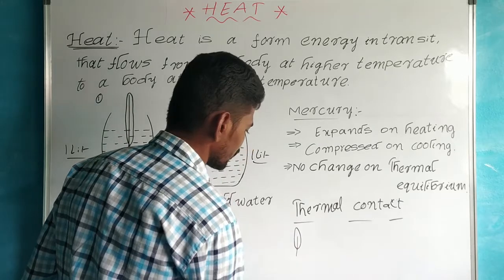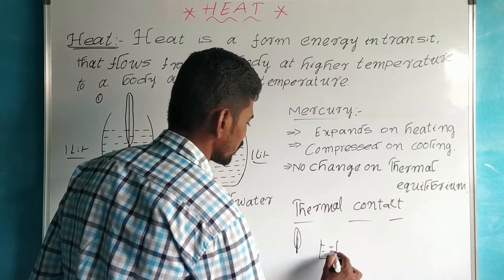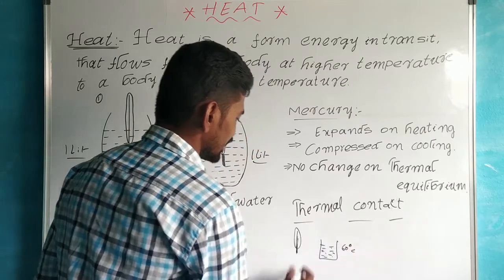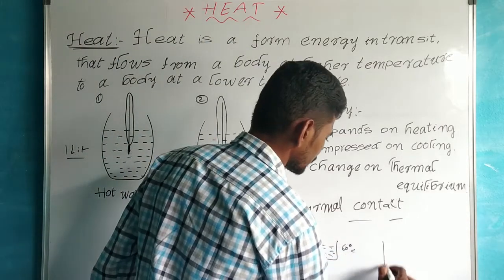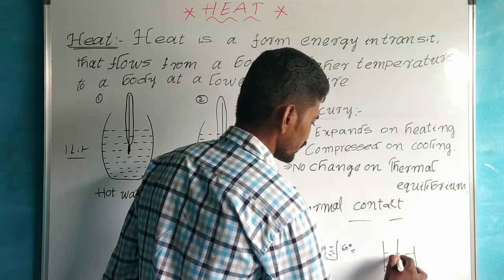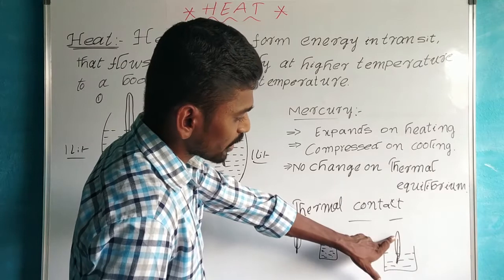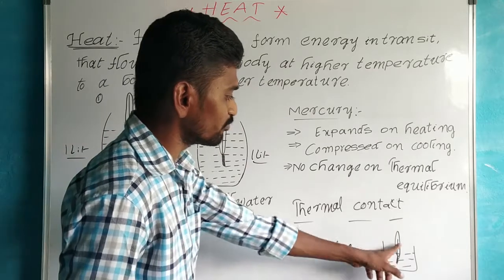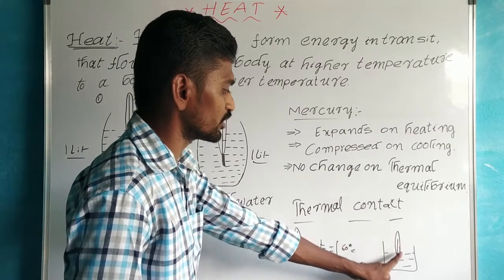Here is mercury at room temperature. Next, here is a water container with hot water at 60 degrees centigrade, and here is another at 30 degrees centigrade at room temperature. The thermometer and hot water are in thermal contact — both are in contact with each other.